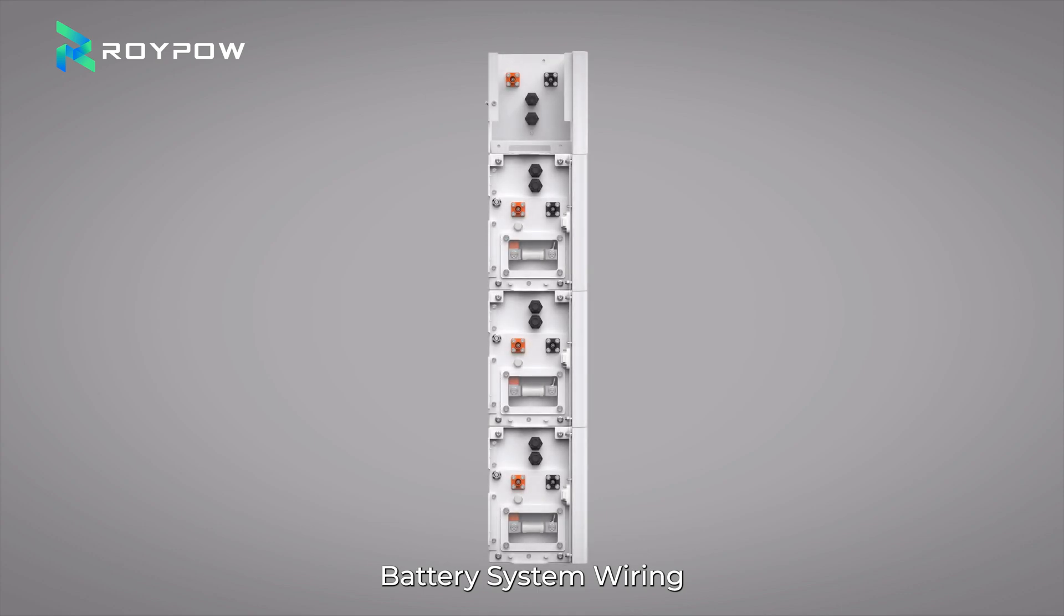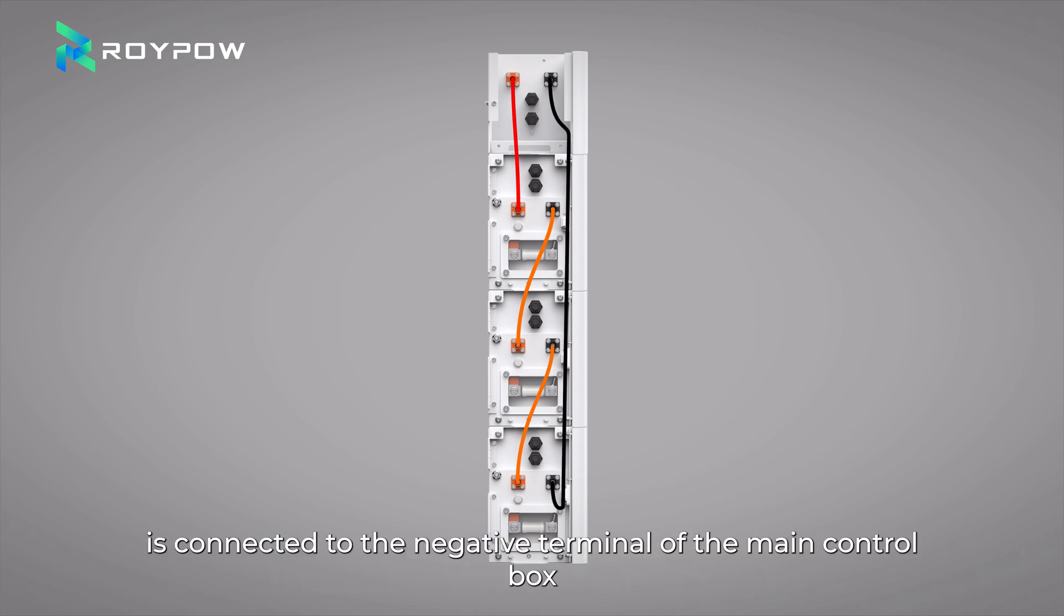Battery system wiring. The batteries are connected in series. The positive terminal of the main control box is connected to the positive terminal of the battery. The negative terminal of the battery is connected to the positive terminal of the next battery, and so on. The negative terminal of the last battery is connected to the negative terminal of the main control box.